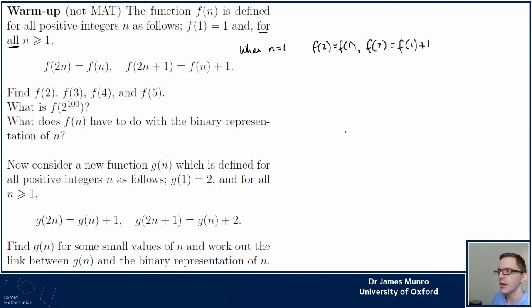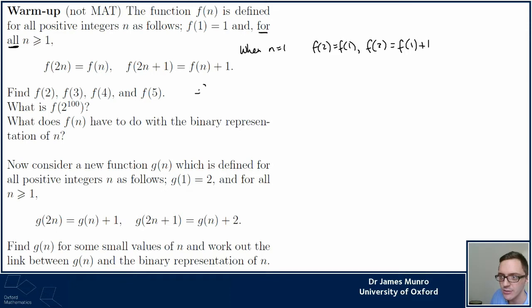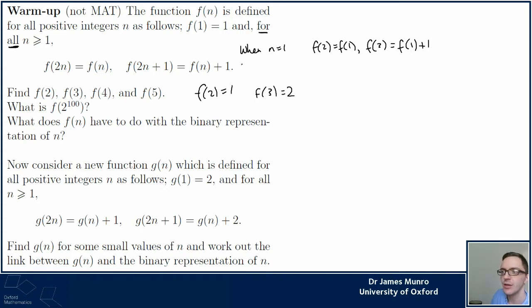We have f(2) equals f(1) when n equals 1, and we knew that f(1) is 1, so f(2) equals 1. And f(3) is going to be 2 because it's f(1) plus 1. Going back to the statement and seeing what happens when n is 2: if I put n equals 2 in, I get f(4) equals f(2) and f(5) equals f(2) plus 1.